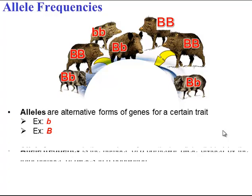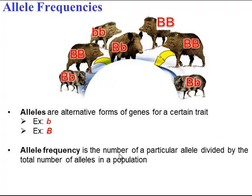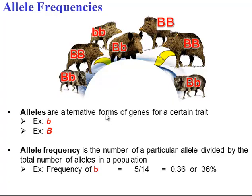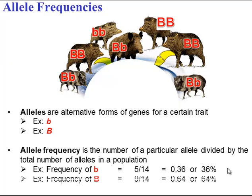To calculate allele frequency, you simply count up the number of a particular allele and divide it by the total number of alleles for that trait in the gene pool. For the recessive allele frequency, there are 5 out of a total of 14 alleles, giving us 36%. You can try calculating the dominant frequency and you would get 64%.